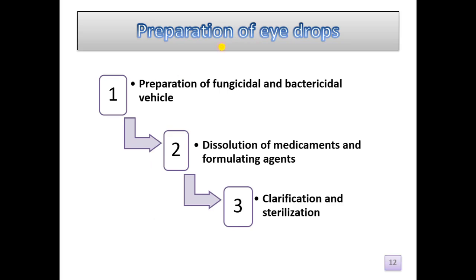Now we will see how we can prepare eye drops. The method of preparation involves three steps: first, preparation of fungicidal and bactericidal vehicle; second, dissolution of medicaments — the active pharmaceutical ingredient (API) and formulating agents; and third, clarification and sterilization.